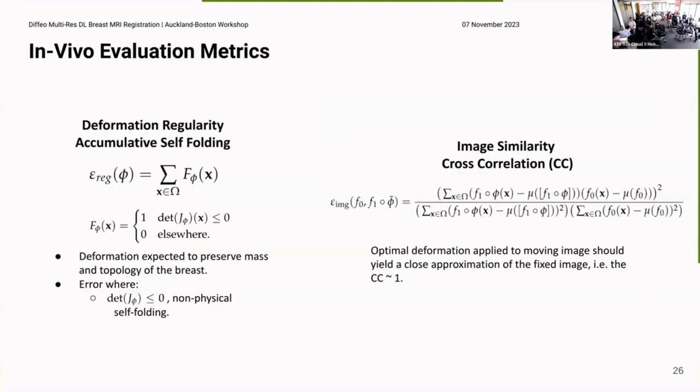And so in order to evaluate the performance, we first use the deformation regularity. So we want to know what the Jacobian determinant of the deformation field is. If it's less than or equal to zero, it's non-physical, it's regions of self-folding. And we expect the deformation to be mass-preserving and also topology-preserving. So we don't want the Jacobian determinant to be less than or equal to zero. So we do an accumulated loss of these self-folding regions. And then we also use the image similarity of the deformation applied to the image.